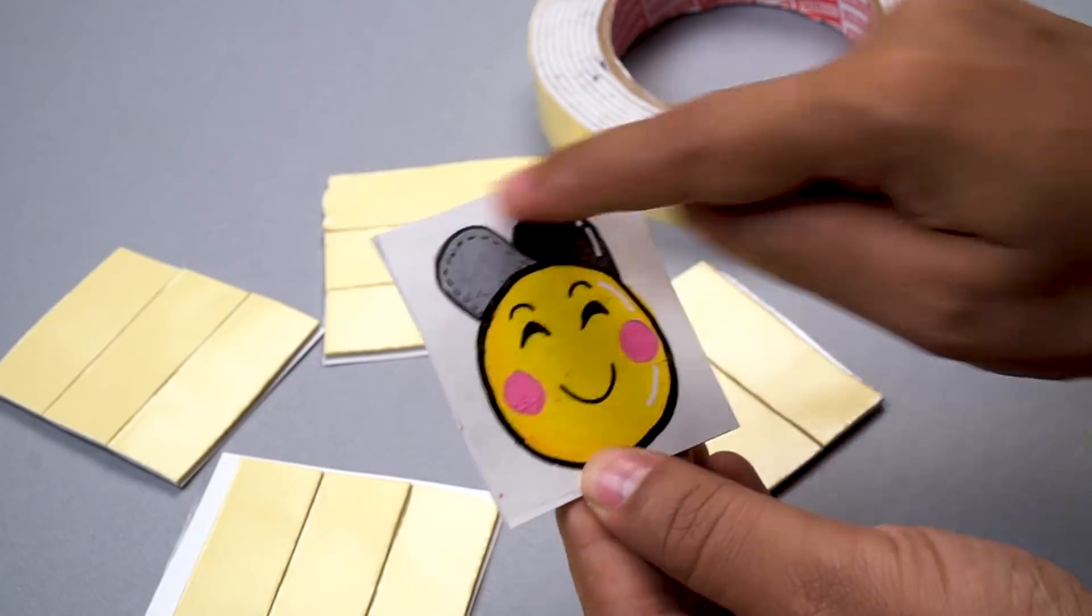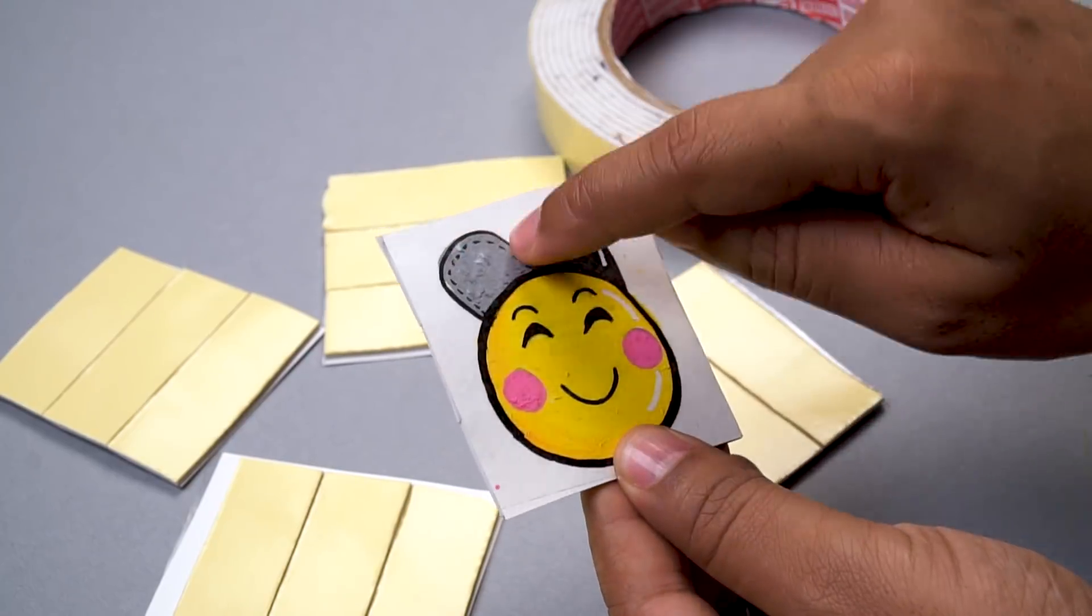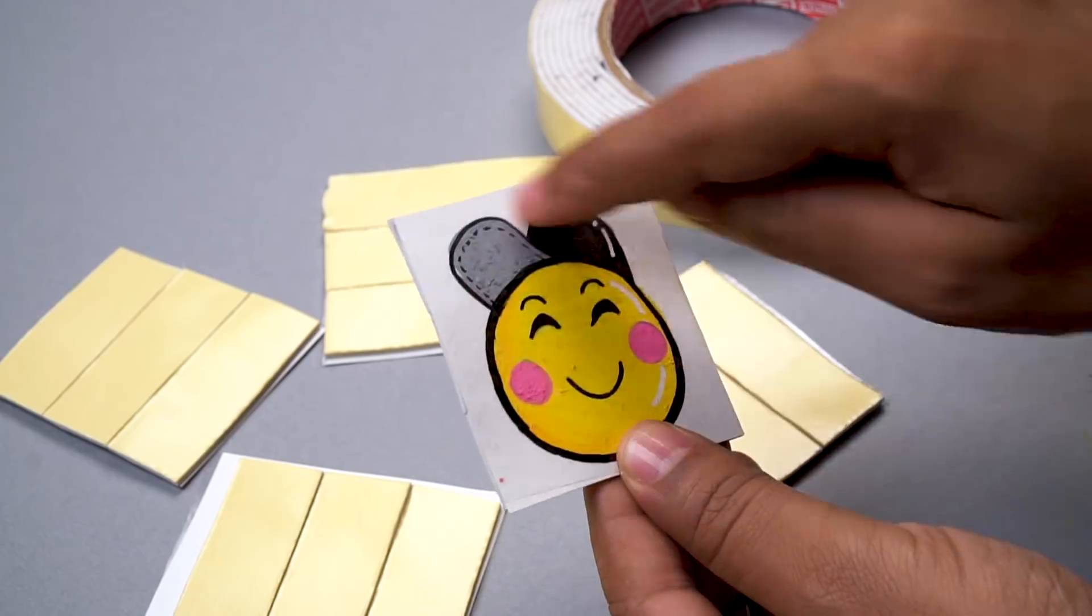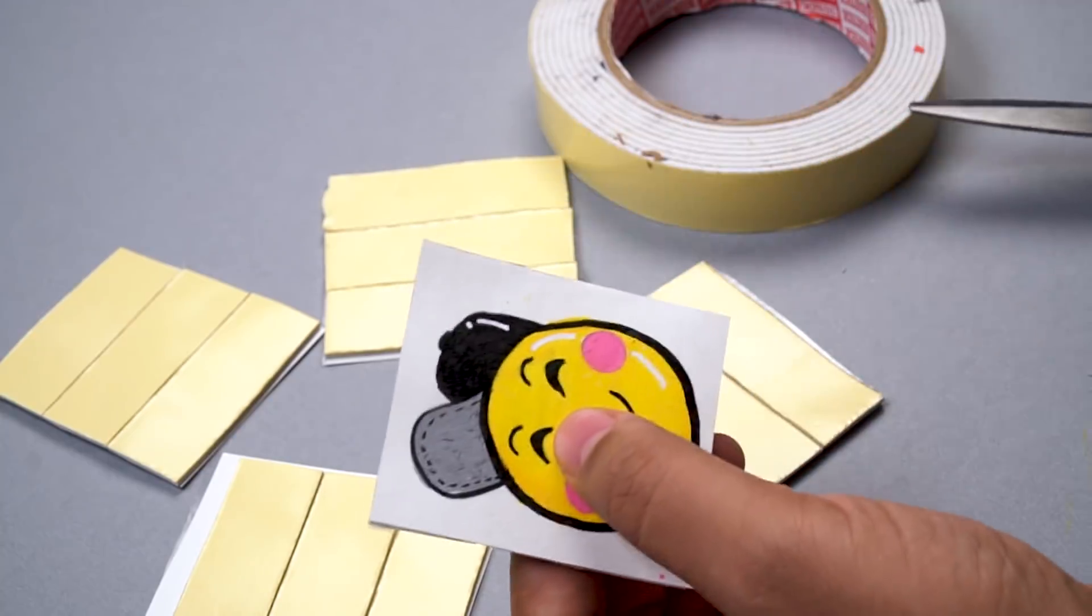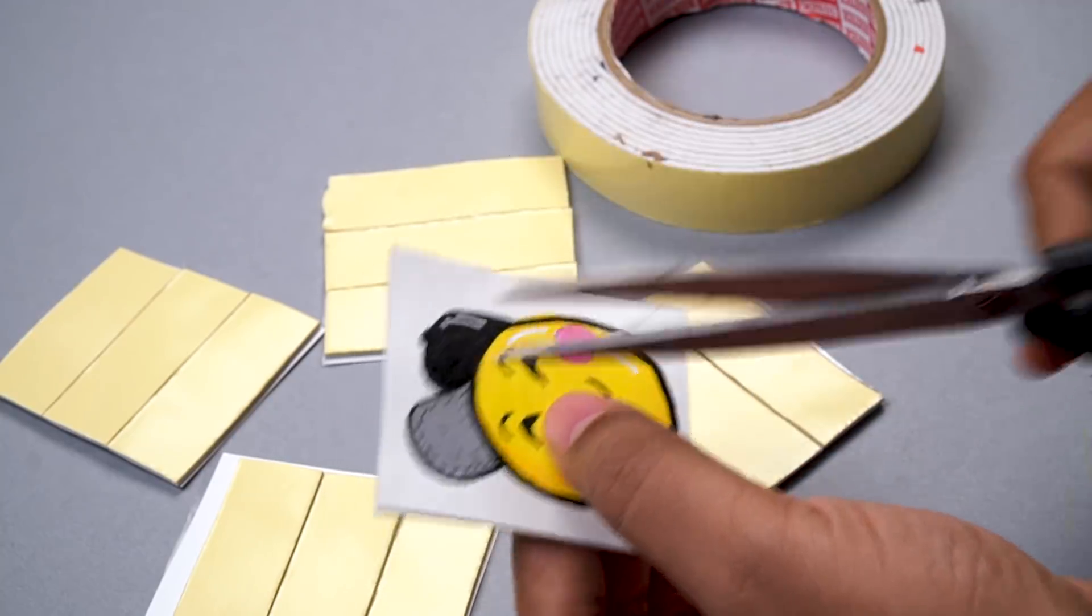But I want it to be like an emoji shape which is this round circular shape. So now you can easily take your scissors and cut them to the shape you like. I'm going to do that starting with this and then we'll do the rest.